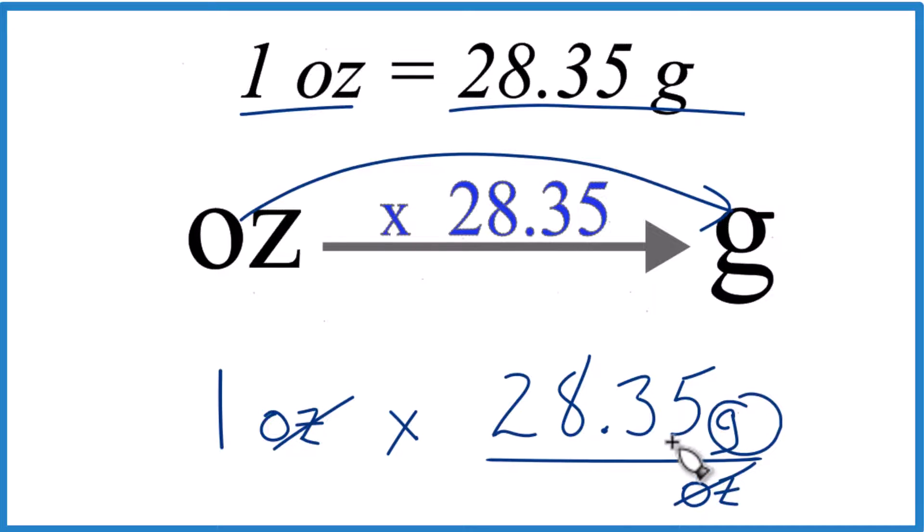So one times 28.35, that's 28.35 grams. The point here really is you need to just memorize that one ounce equals 28.35 grams before you can do any of these conversions from ounces to grams.